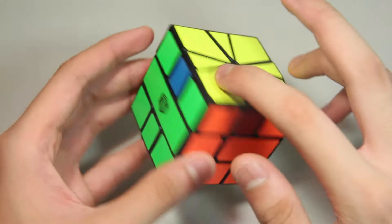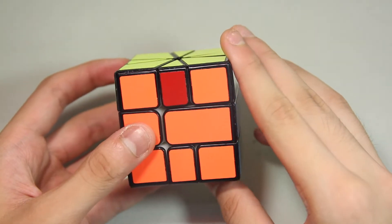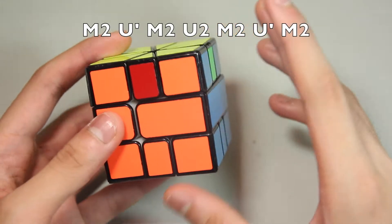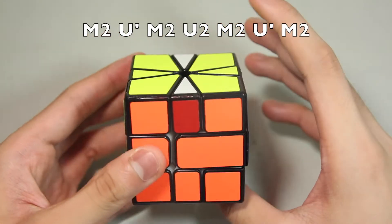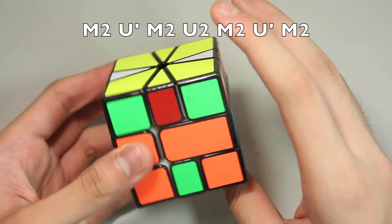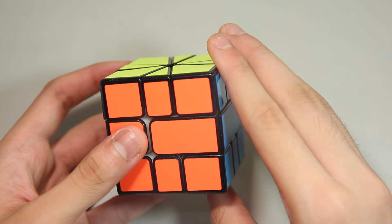So here's the first one, and it's just an H perm on the U layer. What you do is basically the same as an H perm on a 3x3: M2, U prime, M2, U prime, M2. So it's actually pretty fast.